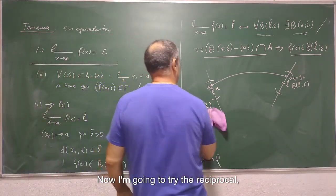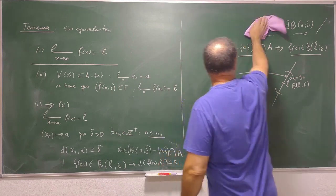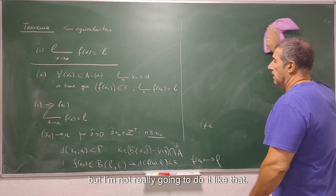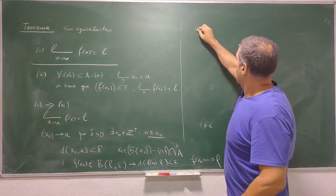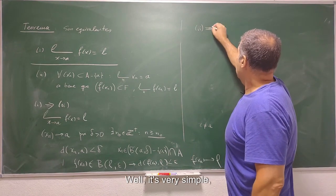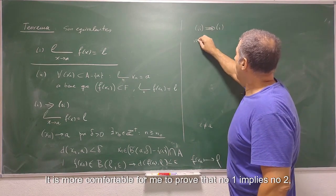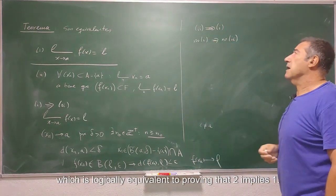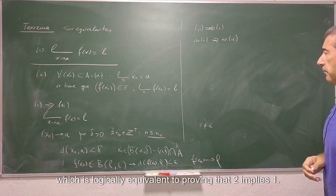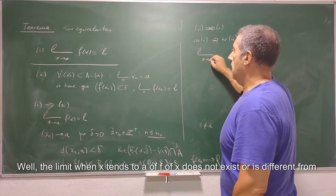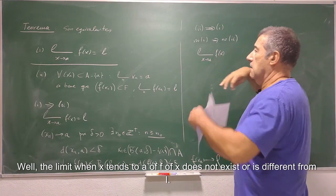Now I'm going to try the reciprocal, that 2 implies 1, but I'm not really going to do it like that. Because? Well, it's very simple. It is more comfortable for me to prove that not 1 implies not 2, which is logically equivalent to proving that 2 implies 1. What does not 1 mean? Well, the limit when x tends to a of f of x does not exist or is different from L.